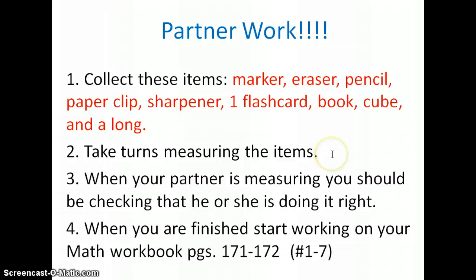You're going to write down how long or short the items are on a piece of paper. I will give you the piece of paper when you get to school. Don't worry about that. When your partner is measuring, you should be checking that he or she is doing it right. Which means that they are starting at zero. So, one is writing and the other is checking. Next, when you're finished doing your partner work and measuring those objects, you're going to start working on your math workbook pages 171 to 172. And you're only doing numbers 1 through 7. Do not do 8, 9, or 10. Also, if you forget the items that you're supposed to collect when you get to school tomorrow, you can always go on one of the student computers and look at the video again to check what are the items and what you're supposed to do.